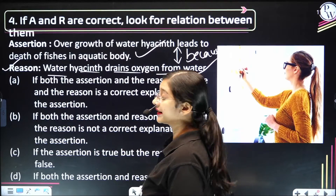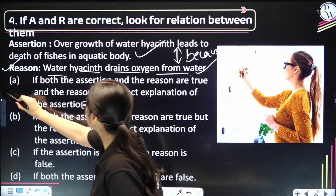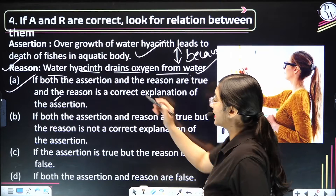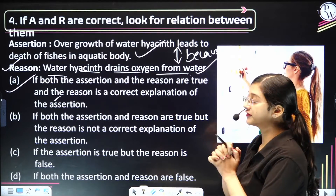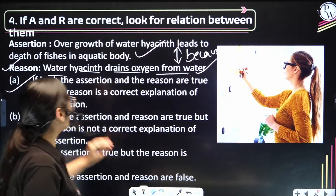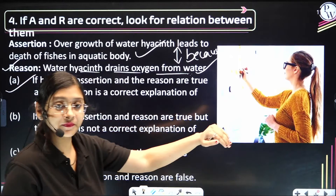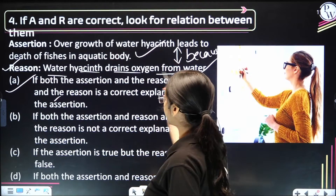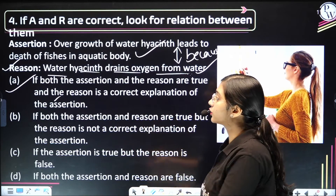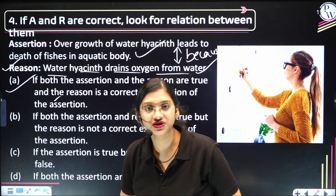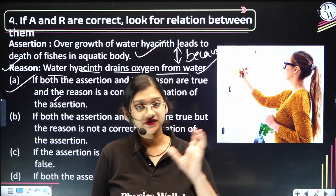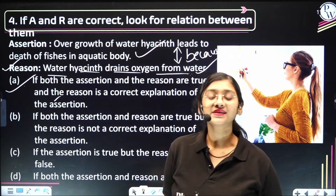Option A says: both assertion and reason are true, and the reason is a correct explanation of the assertion. When I add the word 'because' after the assertion and then read assertion and reason together — if I am able to make sense and say the reason answers the assertion — then option A is correct.